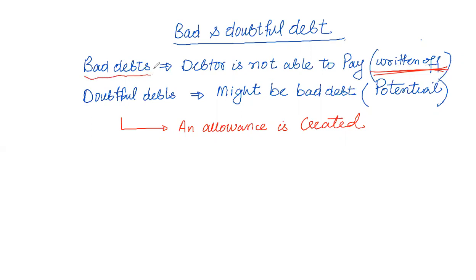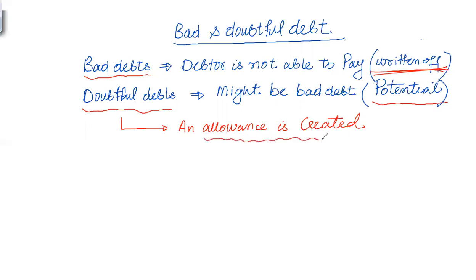Bad debts are when a debtor does not pay. Similarly, doubtful debts are debts that are potential bad debts. In this case, there is a chance that the customer may or may not pay, so we do not immediately write off. Instead, an allowance is created because it is a potential bad debt — direct write-off is not done.